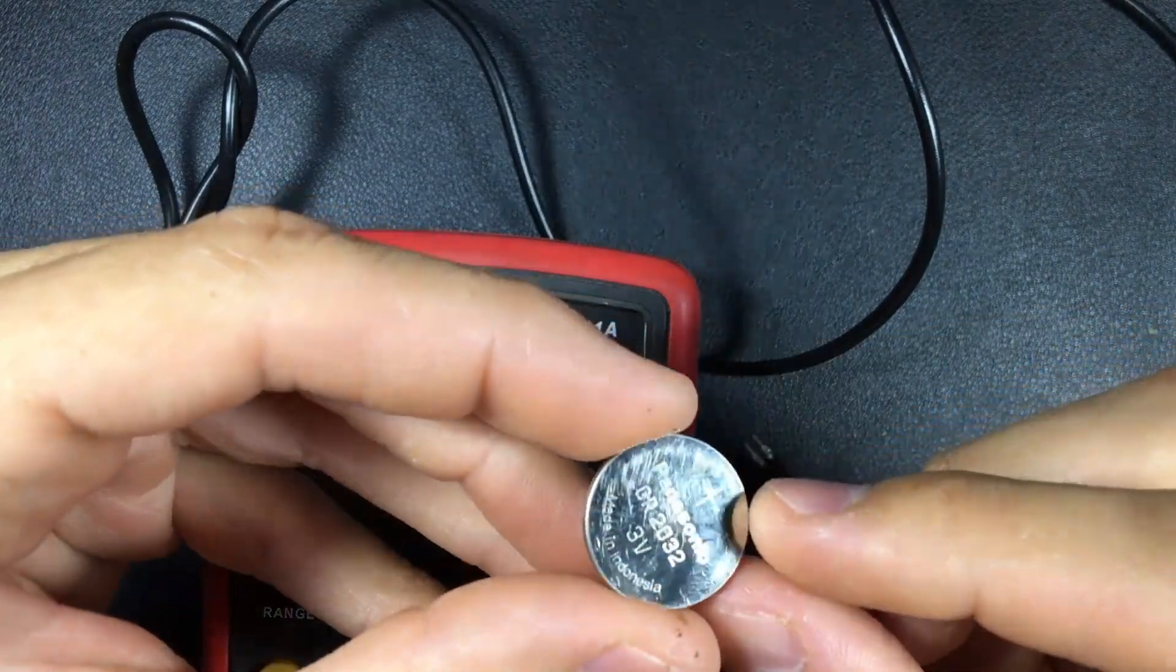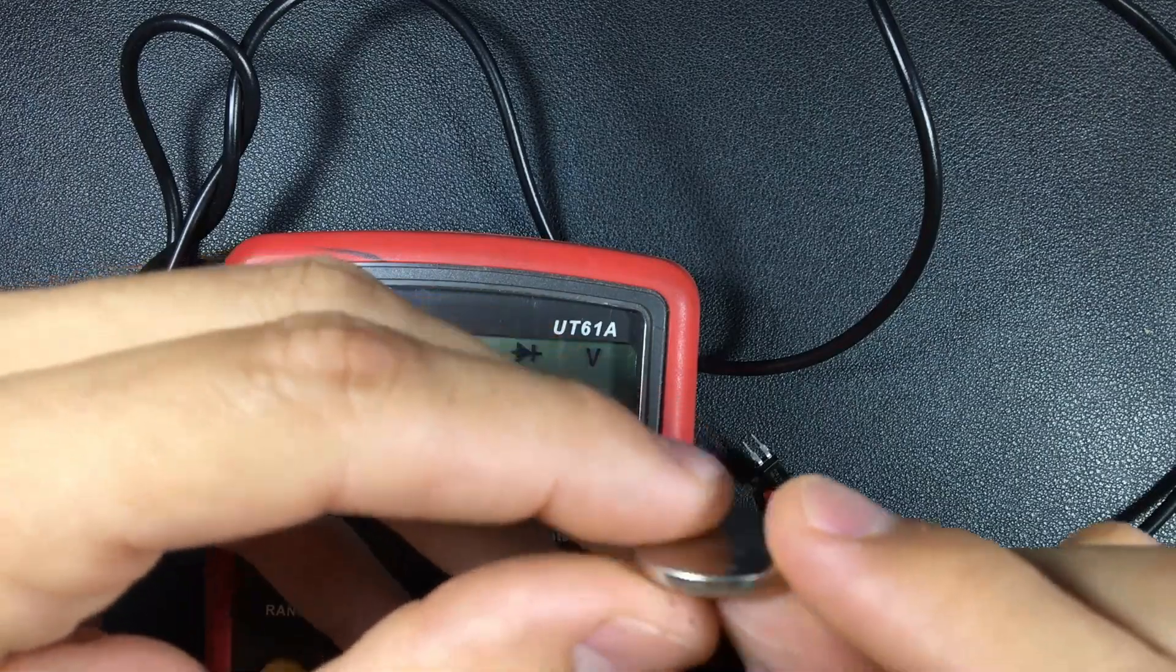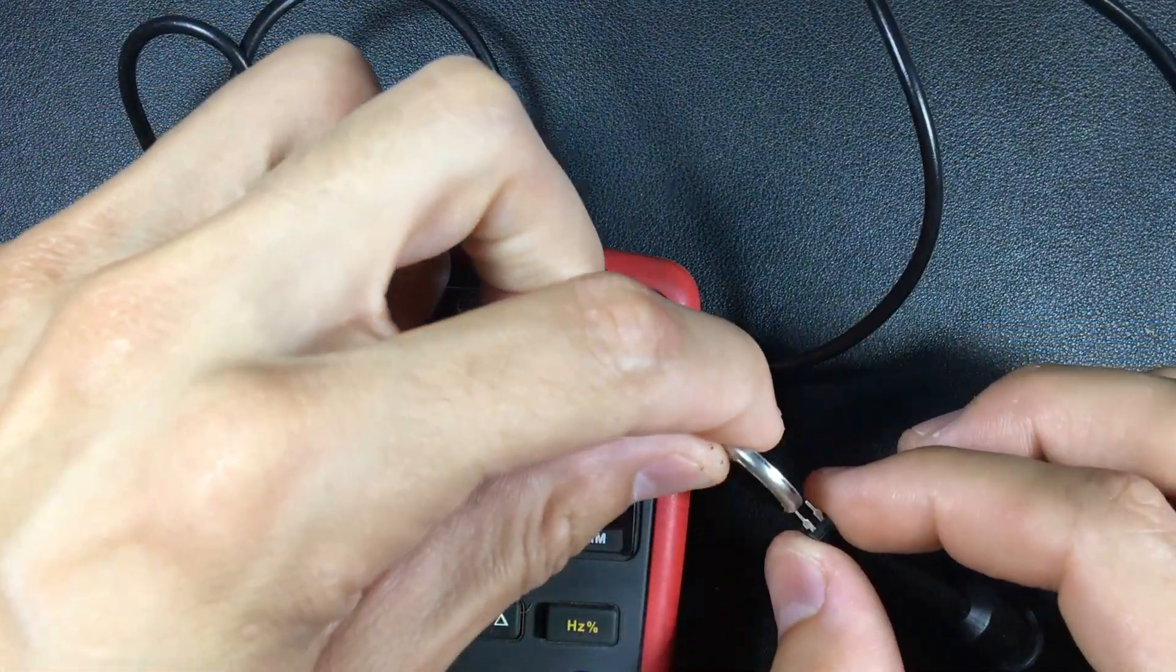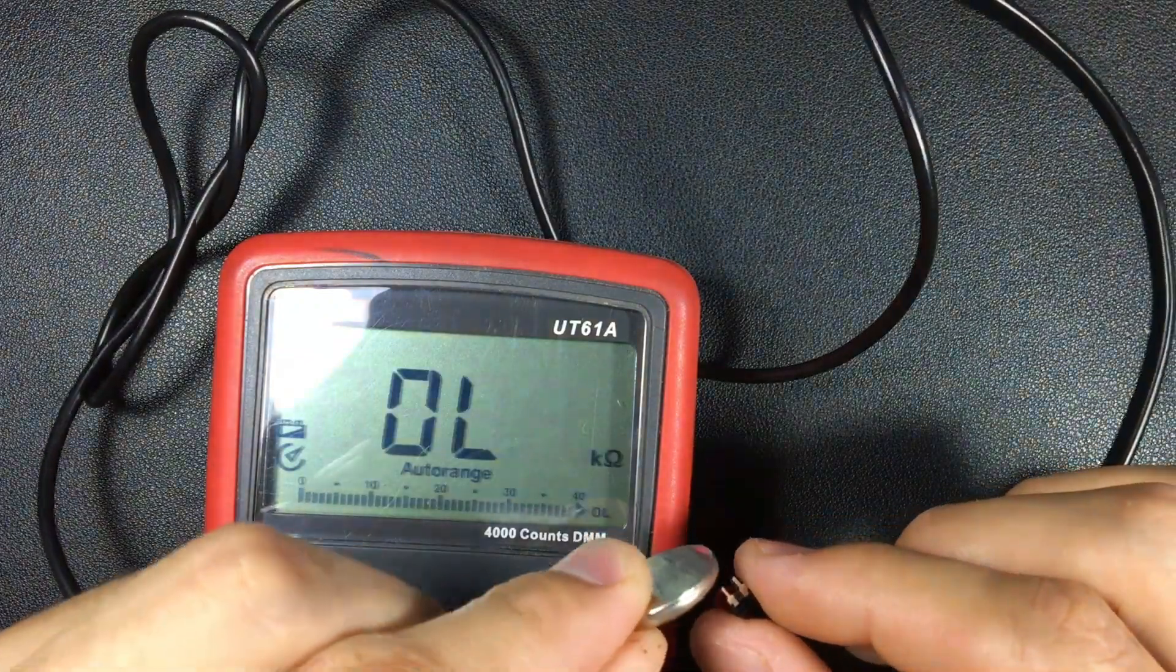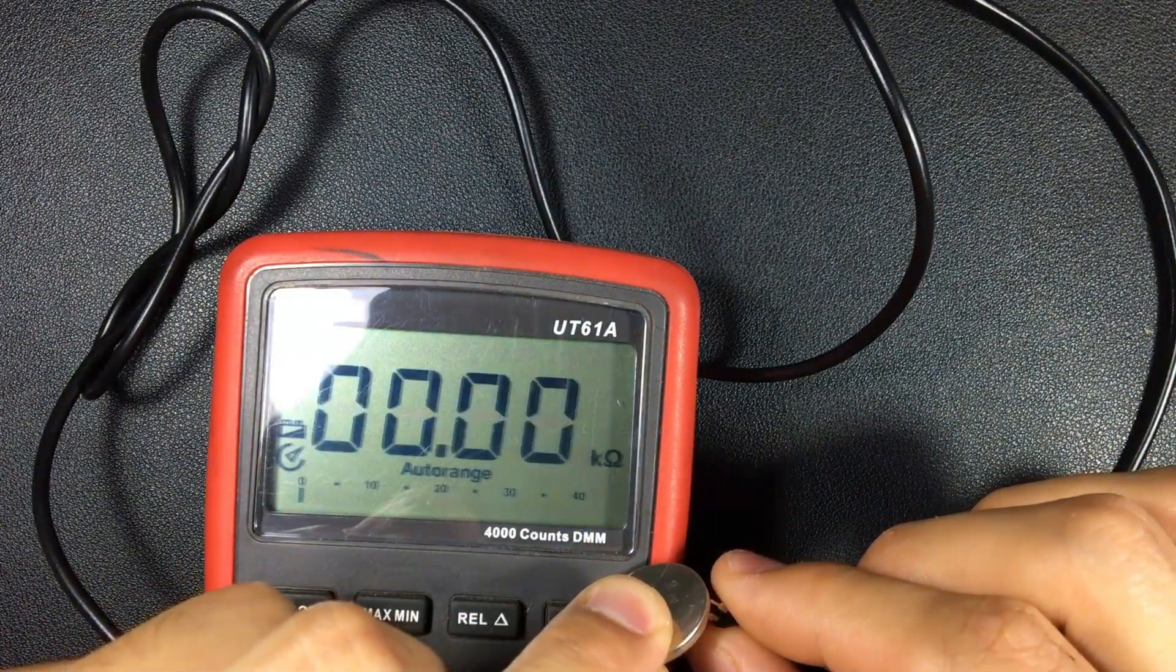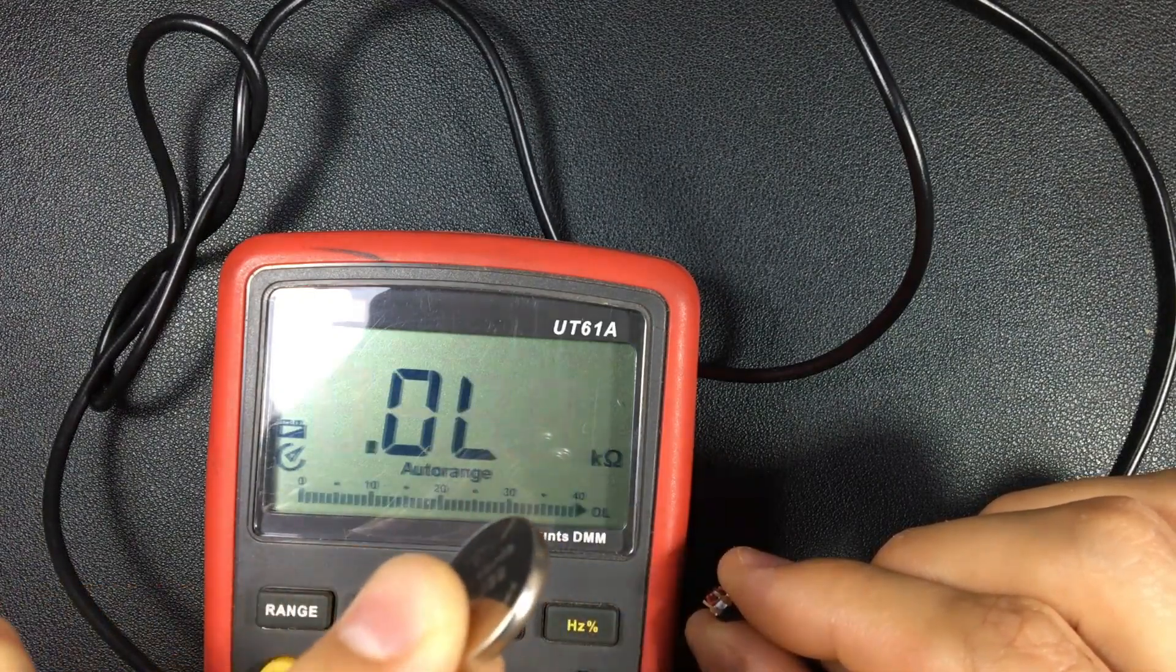Remember that these batteries on the whiter side have their symbol or plus sign well marked, this is the positive. Notice that if we put in continuity what will appear on the screen.